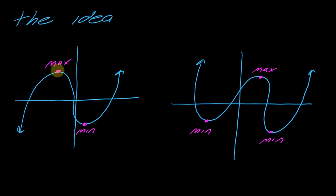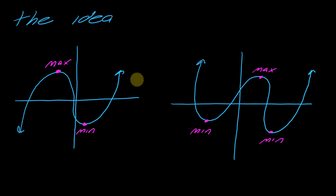Now I want to make one more observation. When the graph has a maximum, look at the shape of the function — in both cases the graph is concave down at that point. And each time we have a minimum, the graph is concave up.